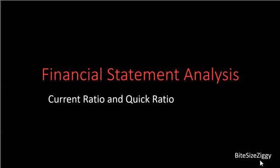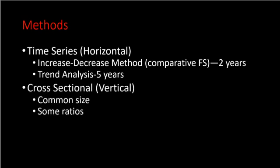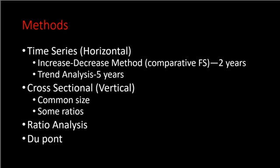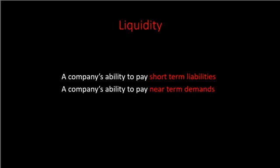This presentation is about current ratio and quick ratio, the most commonly used ratios for liquidity analysis. This is a continuation of our discussion from financial statement analysis. The methods we have include time series, cross-sectional ratio analysis, and two-point liquidity. Liquidity is referred to as the company's ability to pay short-term liabilities.